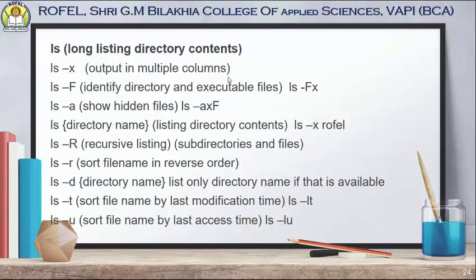ls -x is used for showing the output in multiple columns. ls -F is used to identify directories and executable files — normally ls doesn't show these distinctions, but with the -F option it will. ls -a is used for showing hidden files.